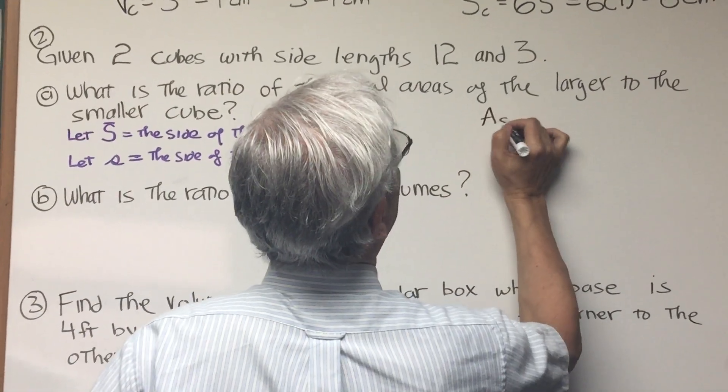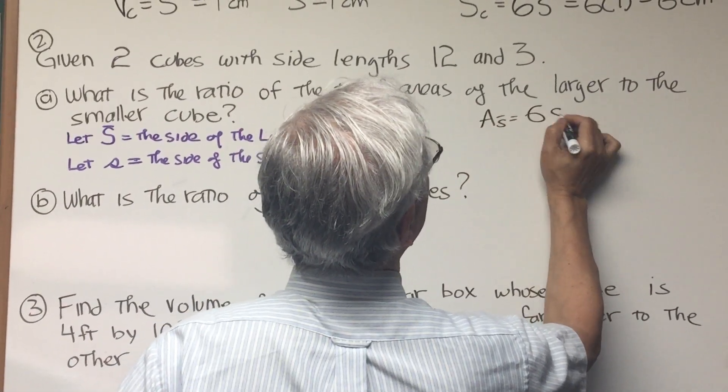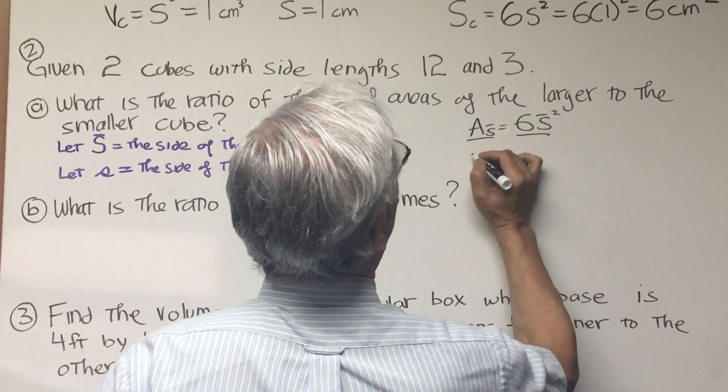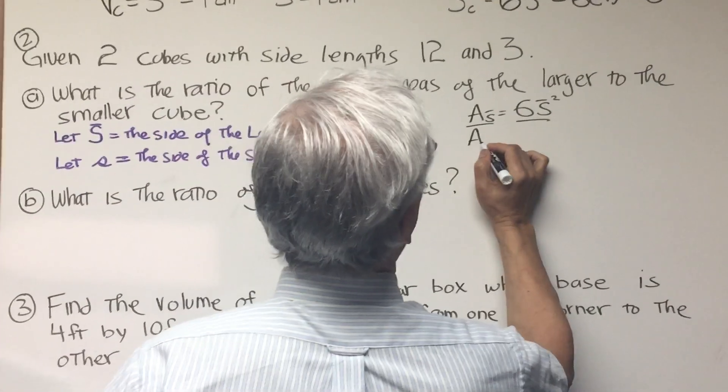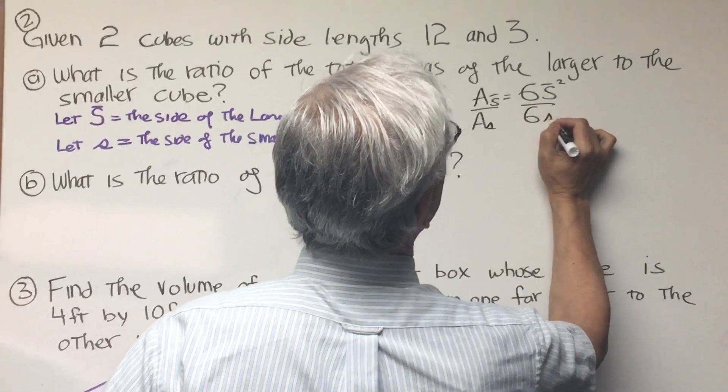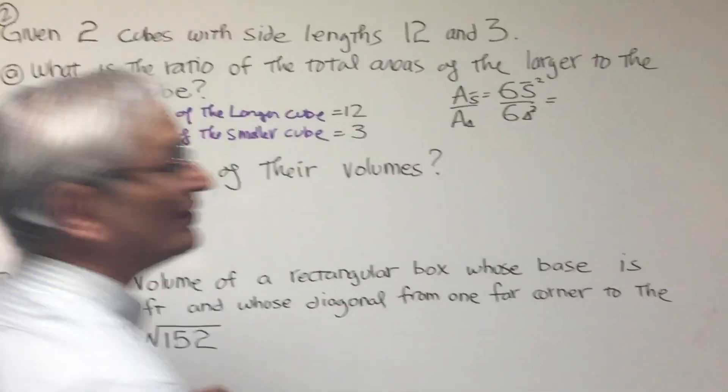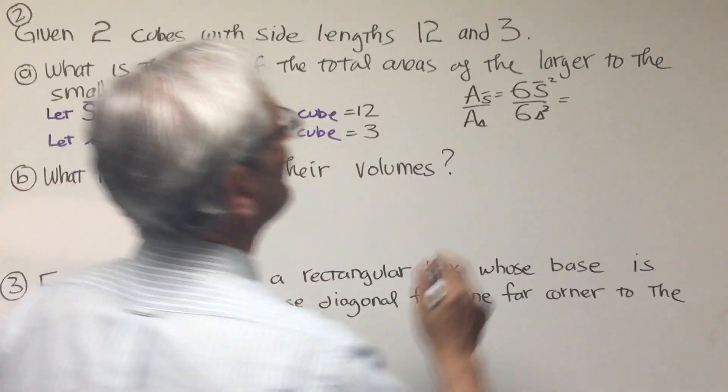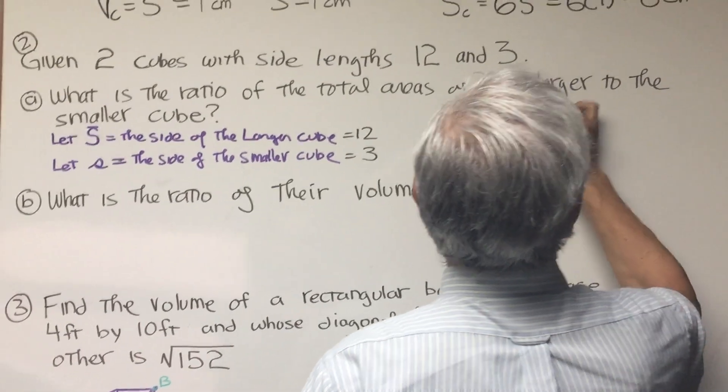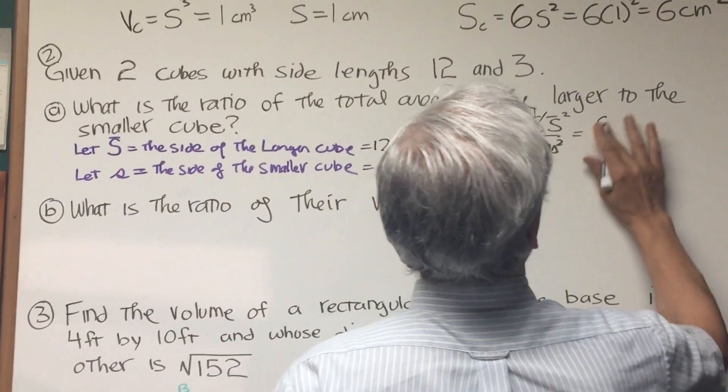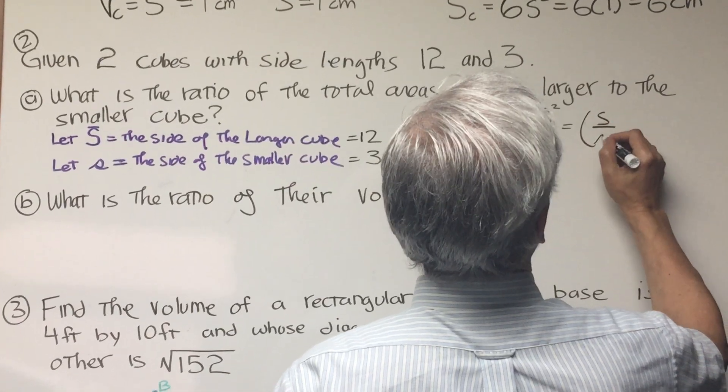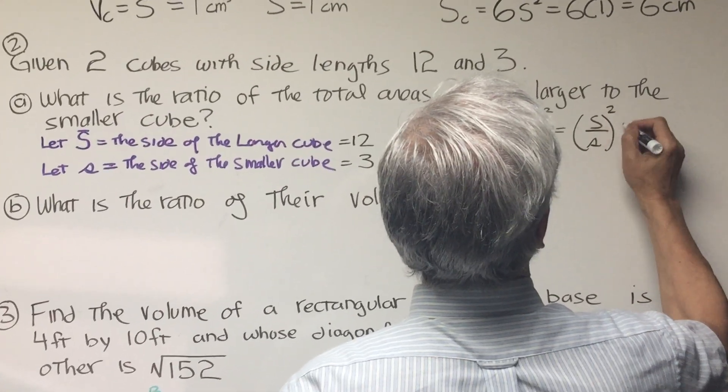Well, the area of the larger cube is going to be 6s squared. The area of the smaller cube is going to be 6s squared. Well, we know that the large s is 12, so this is going to be 6. The 6s cancel out. We don't need to worry about that. It's going to be the ratio of the two sides squared.